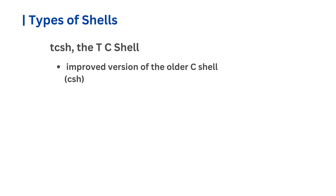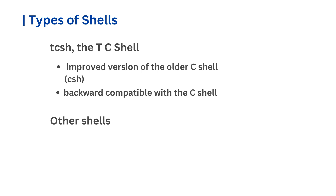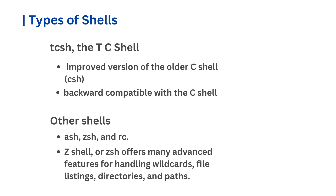For instance, in TCSH, when you press the Tab key, it will complete file and directory names — a feature not available in the original C shell. TCSH is mostly backward compatible with the C shell, meaning it can run most C shell scripts without issues. Over time, several other shells have been developed, each with its own loyal users. Some of these include ASH, ZSH, and RC. The Z shell, or ZSH, is particularly popular for interactive use, offering many advanced features for handling wildcards, file listings, directories, and paths — especially useful on Unix or Linux systems with complex directory structures.